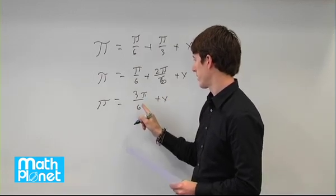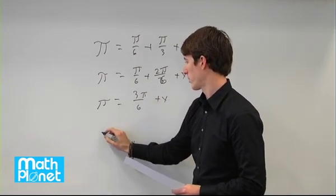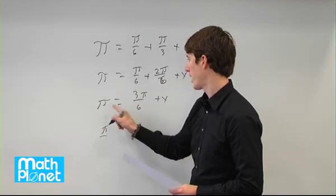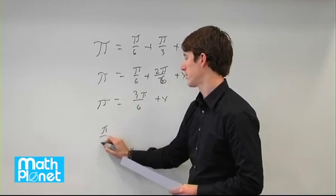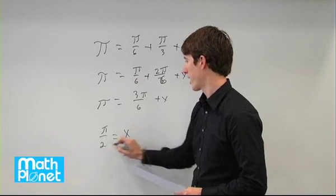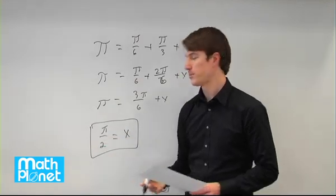Subtract this from this side here. This is just 1 half pi. So we have pi minus 1 half pi is also 1 half pi. So x is pi over 2 radians.